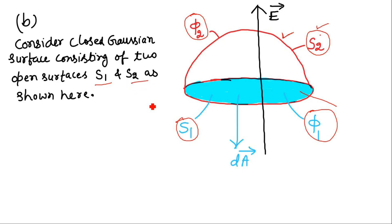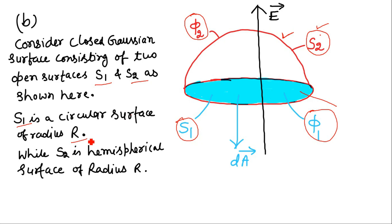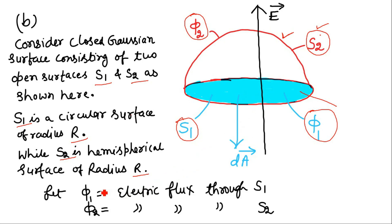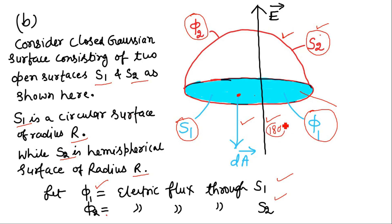S1 is circular with radius R and S2 is hemispherical with radius R. The electric field everywhere is directed vertically upward. For any point on the circular surface S1, the area vector is directed vertically downward because the outward normal points downward away from the closed surface. Therefore, the angle between the area vector dA and the electric field for surface S1 is 180°.